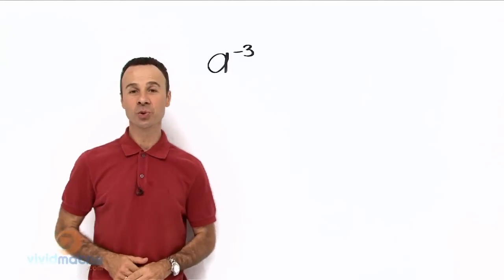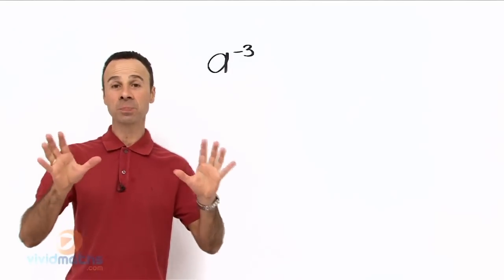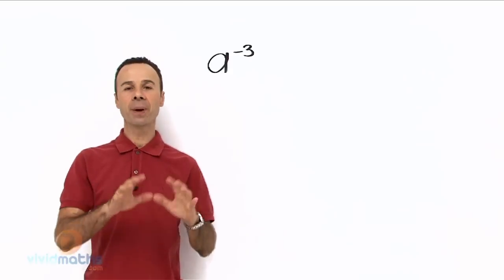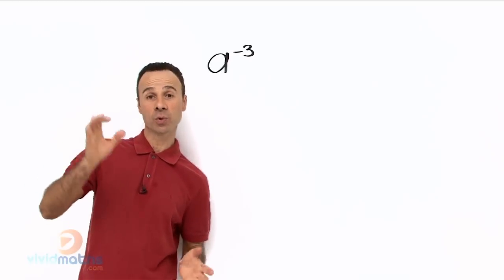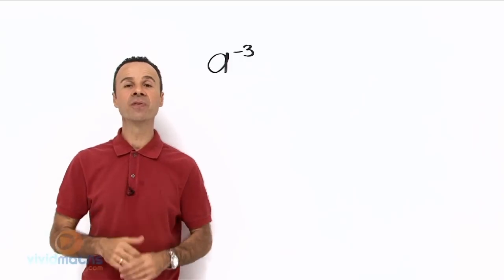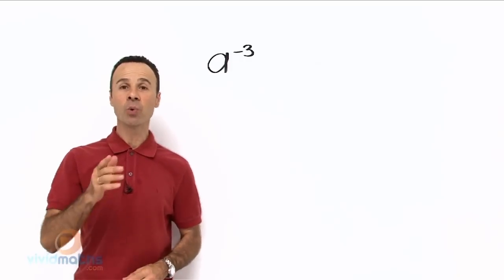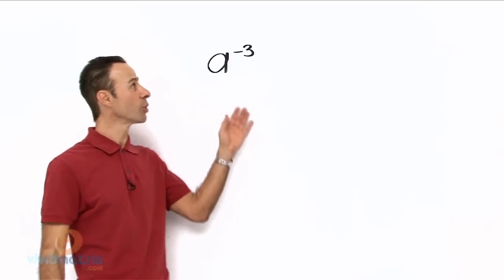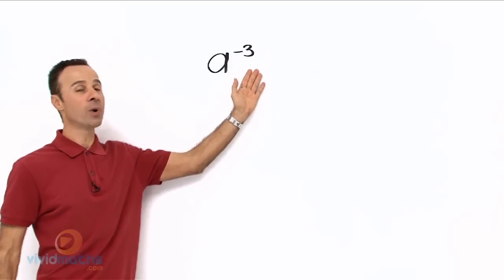As we continue to do powers, we have done multiplication of powers, we have done division of powers, we have done powers to the power of 0 that turns into a 1, and we have even done fractional powers. But what about this one? We are doing negative powers, and in this one we have a to the power of minus 3.